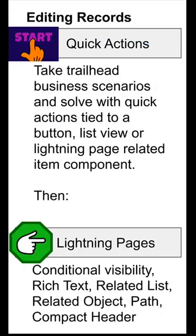Next, you're going to have to learn how to help people edit records well and quickly and efficiently. Quick Actions is your friend here. Go there first. Learn how to tie Quick Actions to buttons, to list views, to lightning page components, in particular the related object component. You can require certain fields in a Quick Action. You can default certain fields. You can change the order of fields. You can have hidden fields that are being filled in because of the name of the button or the name of the action. Learn how to do all of that.